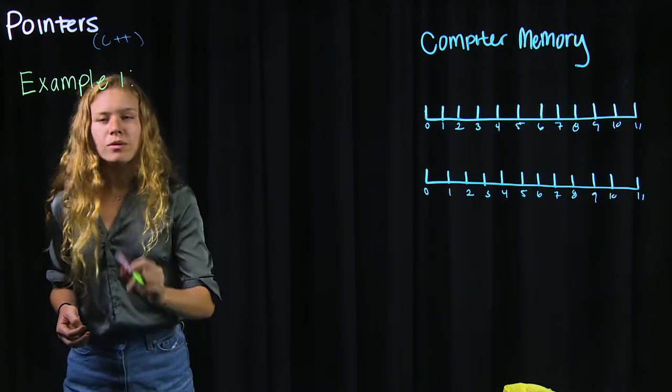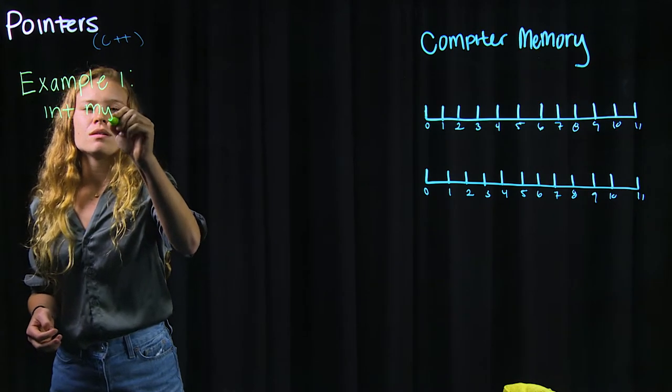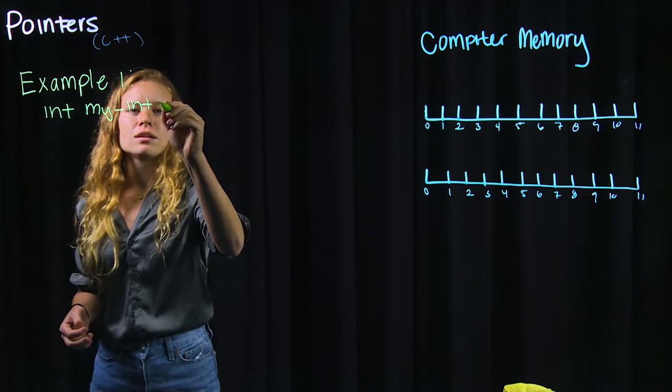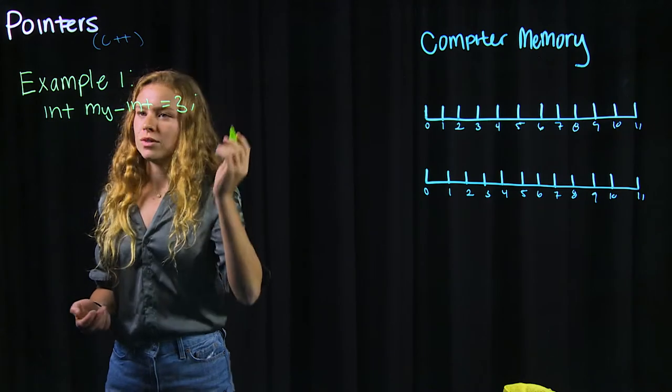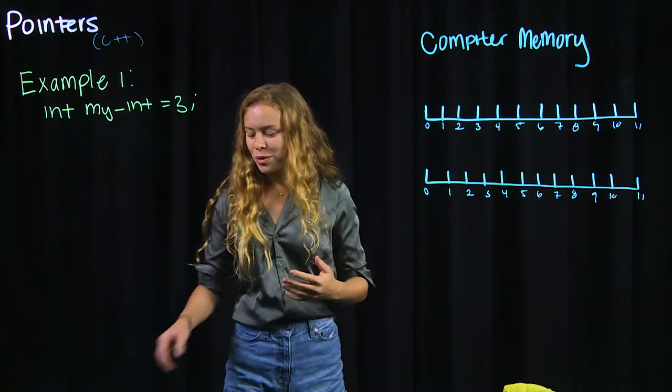In this example we're just going to declare an integer, int my_int = 3. So we create an integer and we set it equal to 3. You've probably seen this before. Pretty simple.